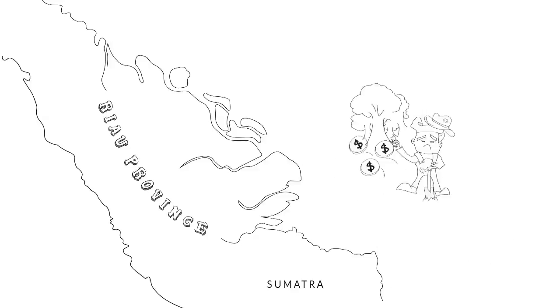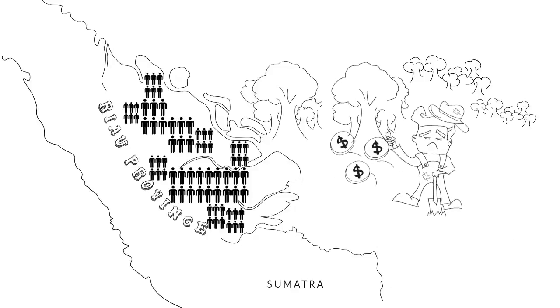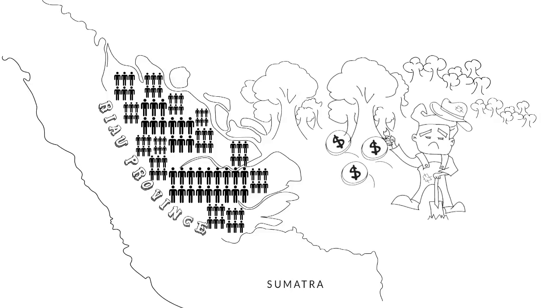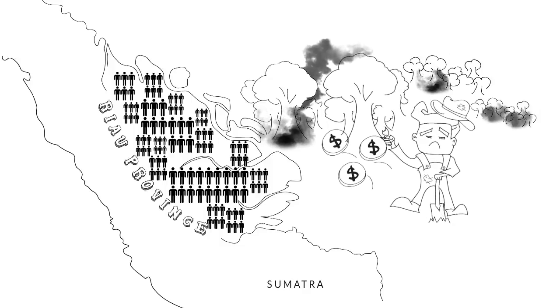Many residents of Riau depend on forestry activities to make a living. And with over 5 million residents and counting, there is an immense pressure for locals to clear land quickly and inexpensively. As a result, they often resort to illegal burning.